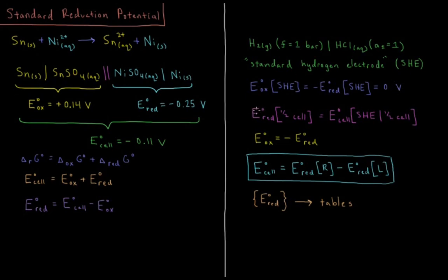If we want to find the standard reduction potential of a given half cell reaction, we set up an electrochemical cell with the standard hydrogen electrode at our anode and our half cell of interest at the cathode. We can then get our standard reduction potential this way, and whenever that cell is at the anode, the standard oxidation potential is just the negative of its standard reduction potential — the potential when oxidized is the reverse of when it is reduced.